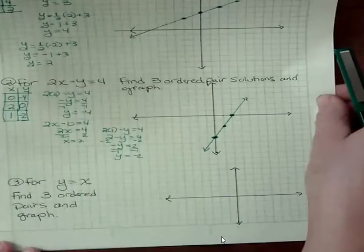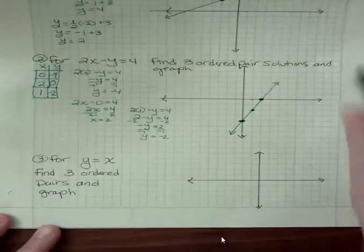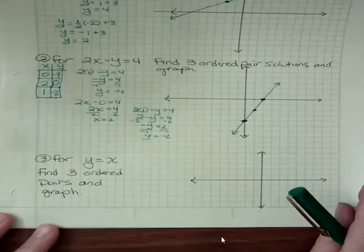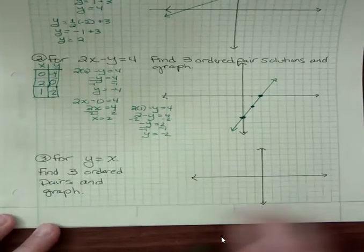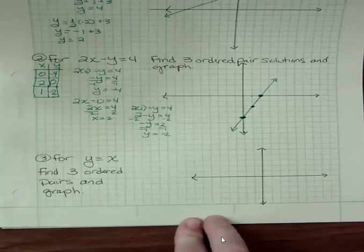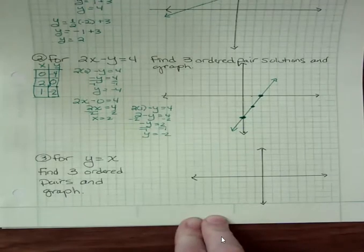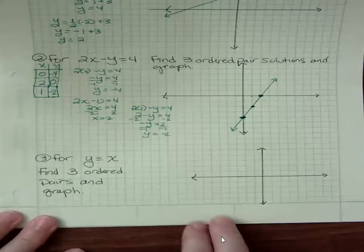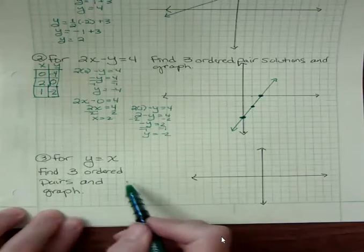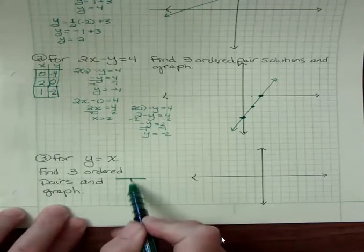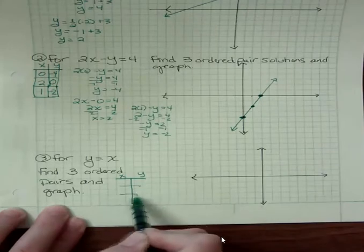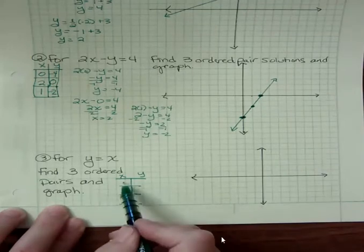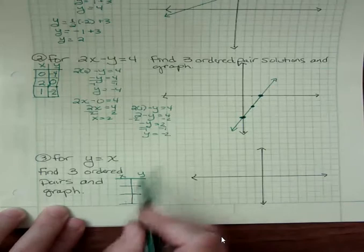What about this one? The last one for Y equals X, find three ordered pairs and graph. So this is one that students balk at a little bit because they're like, whoa, it looks totally different. I don't know what to do. Let's just start the process for a second and see what happens. In this format I like to choose X values. What if X was zero? What if X was one? What if X was negative one?